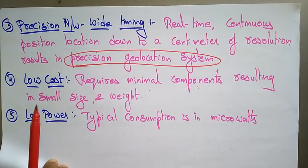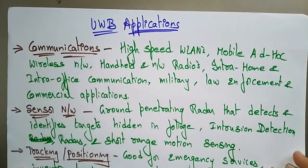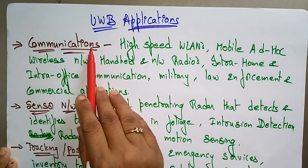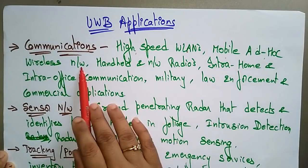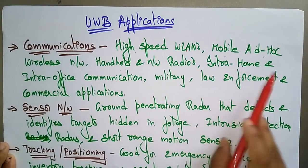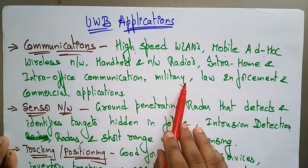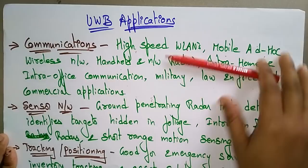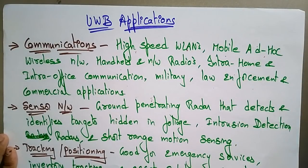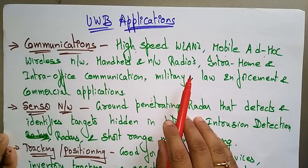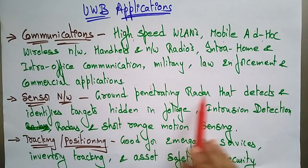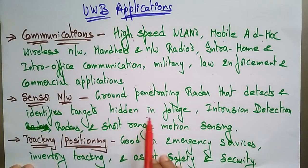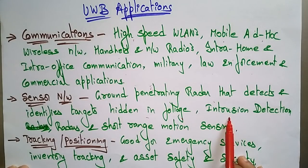Applications of UWB include high-speed wireless LANs, mobile ad hoc wireless networks, handheld and networked radios, intra-home and intra-office communications, and military, law enforcement, and commercial applications. In sensor networks, UWB is used in ground-penetrating radar that detects and identifies targets hidden in foliage, intrusion detection radars, and short-range motion sensing.